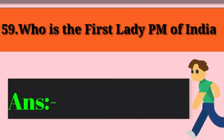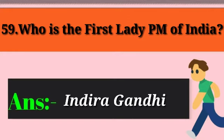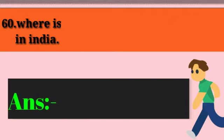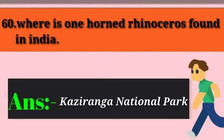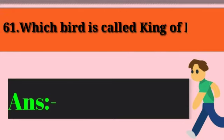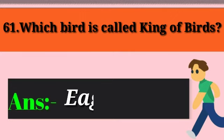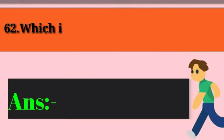Question 59: Who is the first lady prime minister of India? Answer: Indira Gandhi. Question 60: Where is the one-horned rhinoceros found in India? Answer: Kaziranga National Park, Assam. Question 61: Which bird is called the king of birds? Answer: Eagle. Question 62: Which is the smallest bird in the world? Answer: Hummingbird.